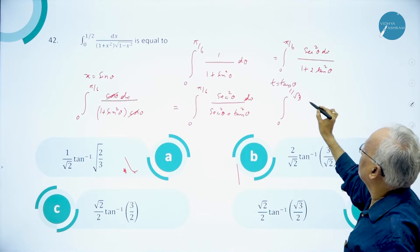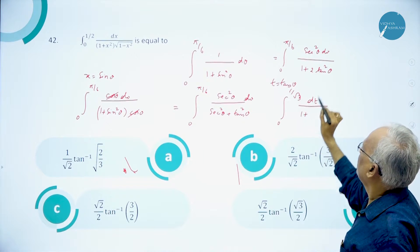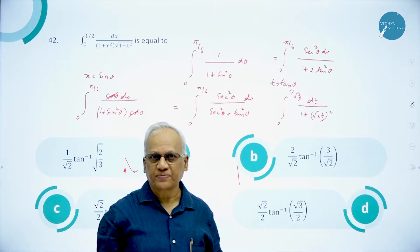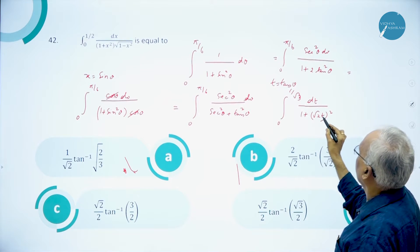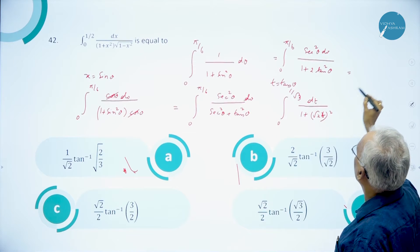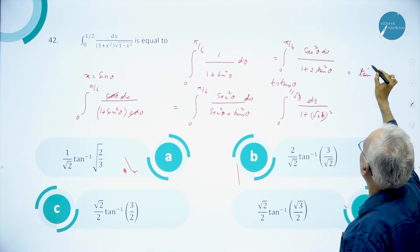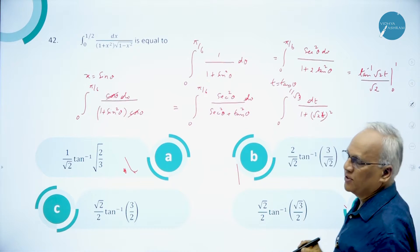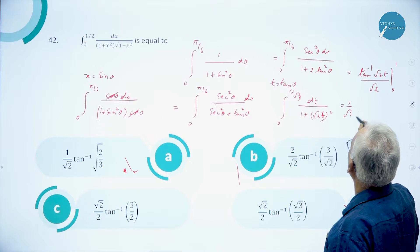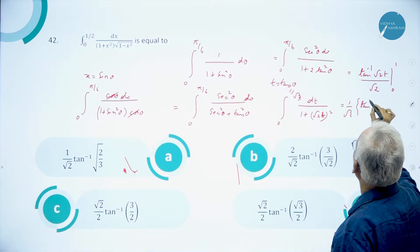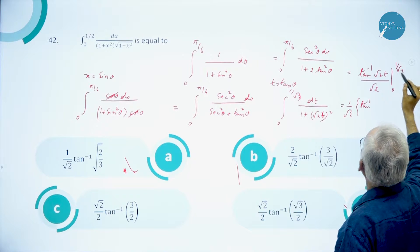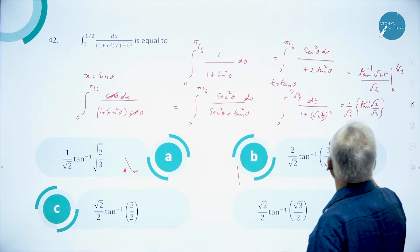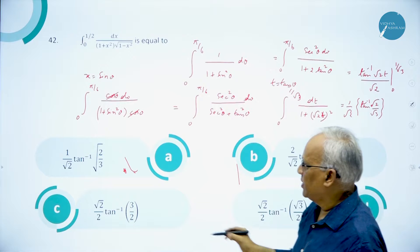So we have the integral from 0 to 1/√3 of dt/(1+2t²), which is of the form 1/(1+(√2t)²). The integral of 1/(1+x²) is tan⁻¹x. Here you must divide by the coefficient of t, which is √2. Therefore the answer is (1/√2)·tan⁻¹(√2·t) evaluated from 0 to 1/√3, giving (1/√2)·tan⁻¹(√2/√3). So the answer is option A.